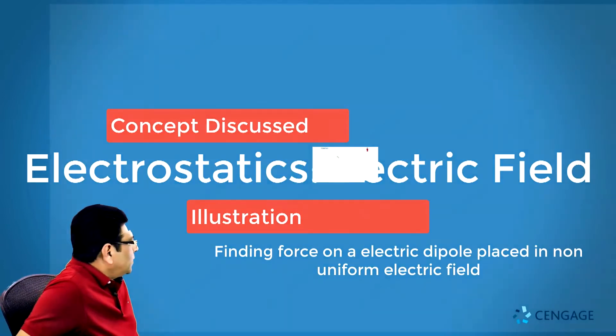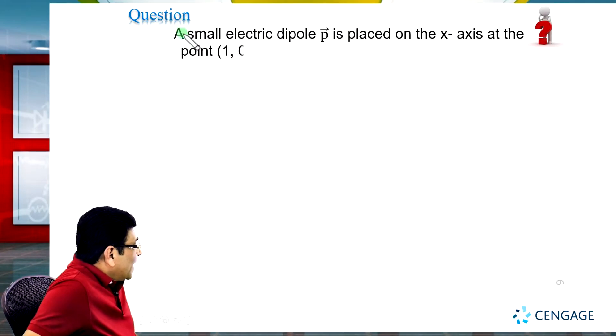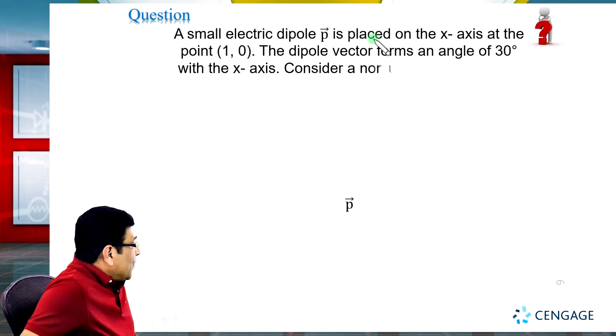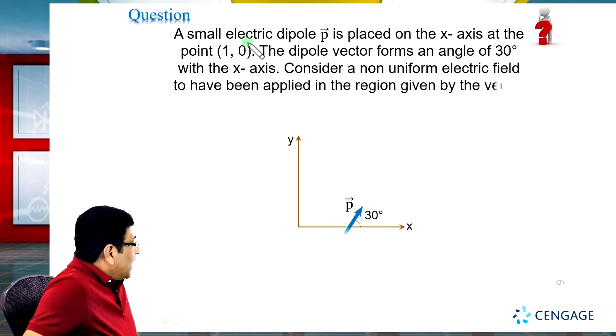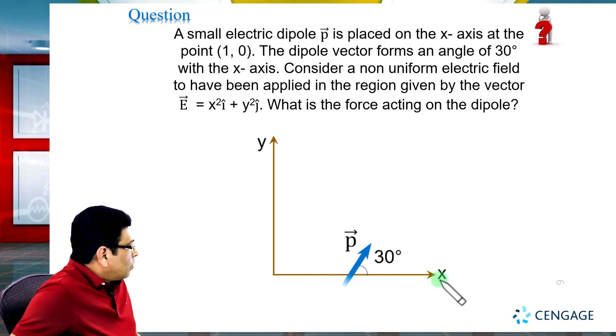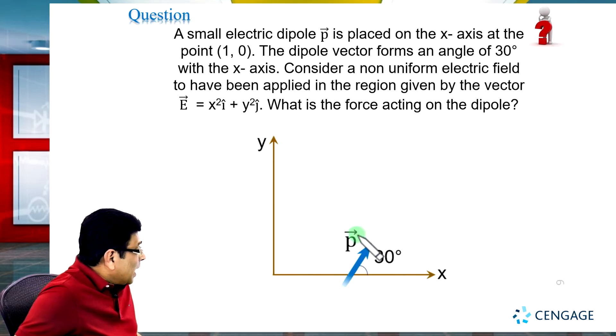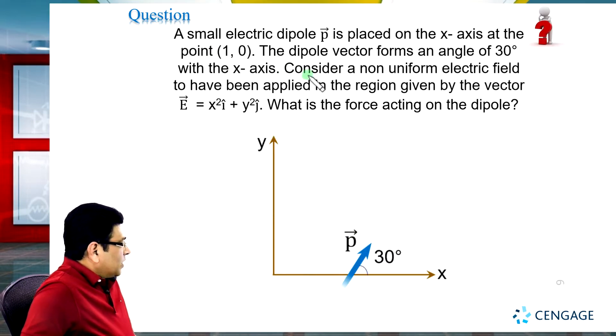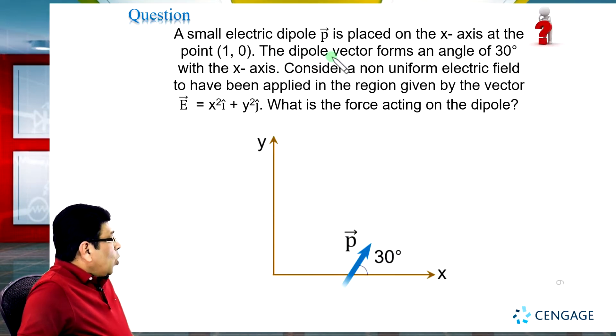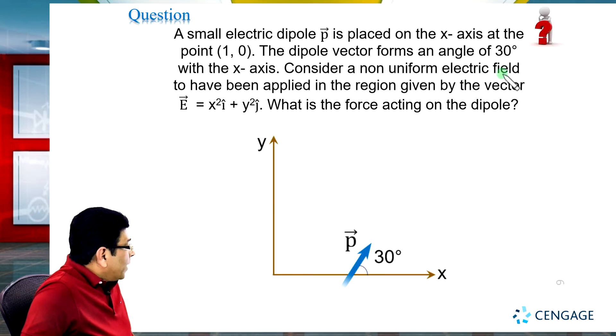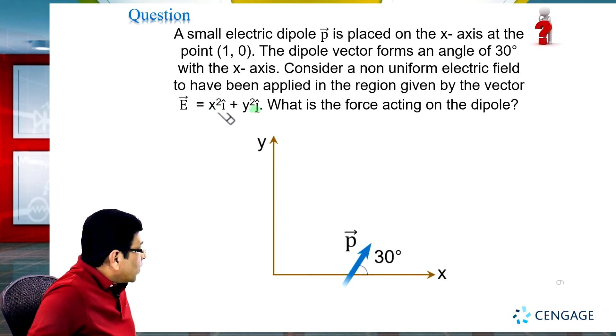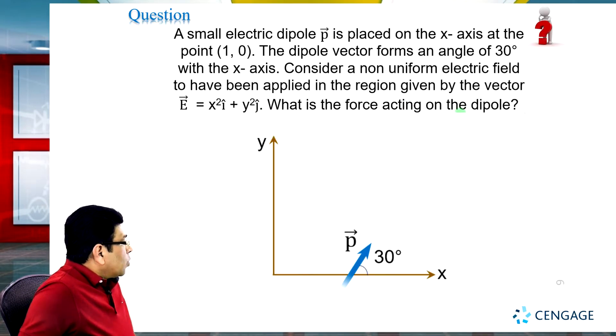Let us move to the illustration part. We are given a small electric dipole P vector placed on the x axis at point (1,0). The dipole vector forms an angle of 30 degrees with the x axis. Consider a non-uniform electric field applied in the region given by E vector equals x² i cap plus y² j cap. What is the force acting on the dipole?